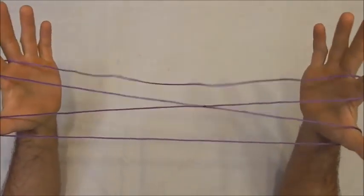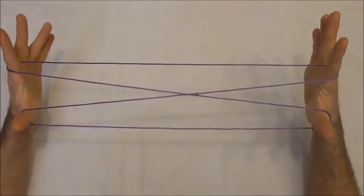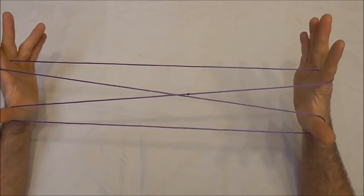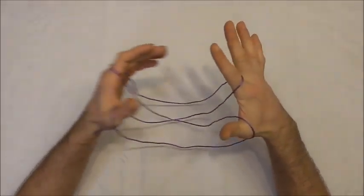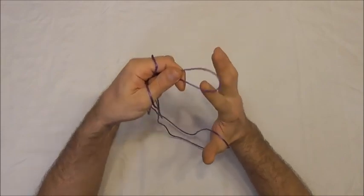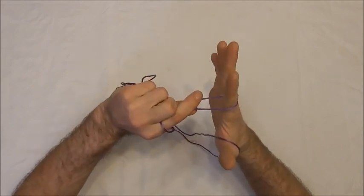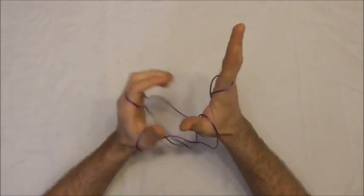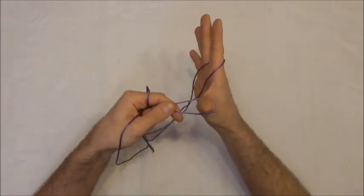And then I just want to release my little fingers, and I want to put a half twist in all the loops. So I want to take my pointer finger strings off the pointer fingers, half twist towards me and then place them back on to the pointer finger.